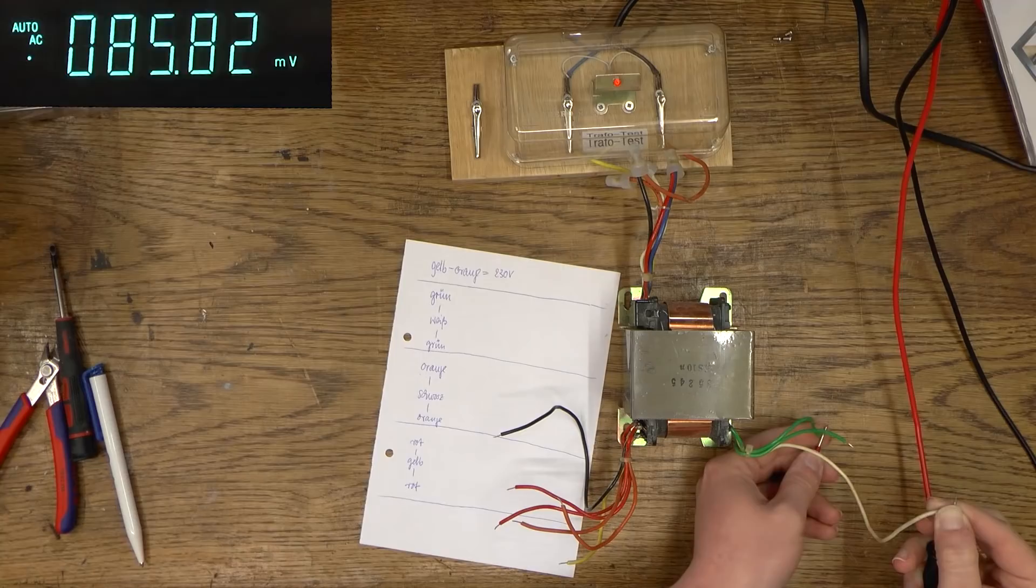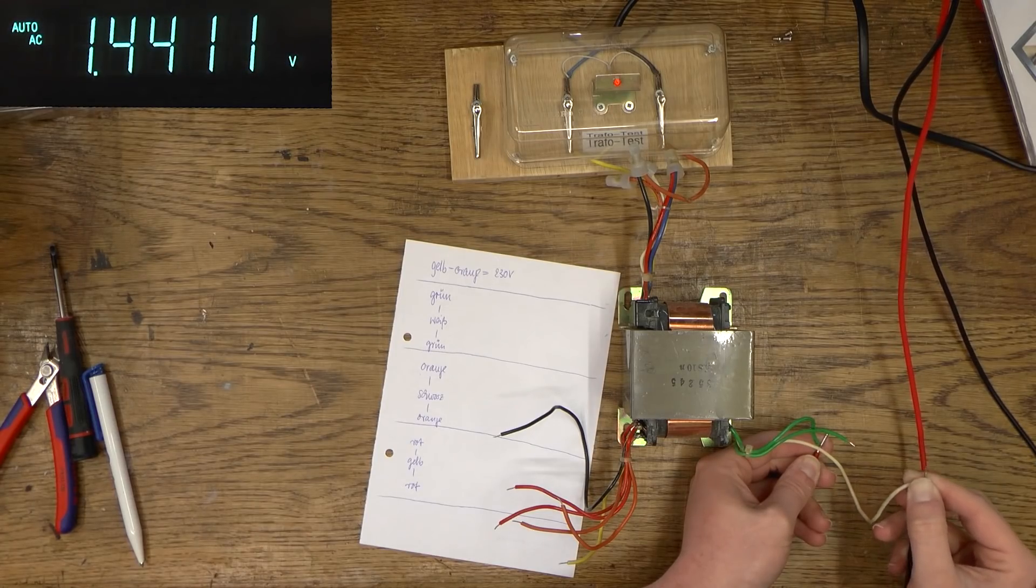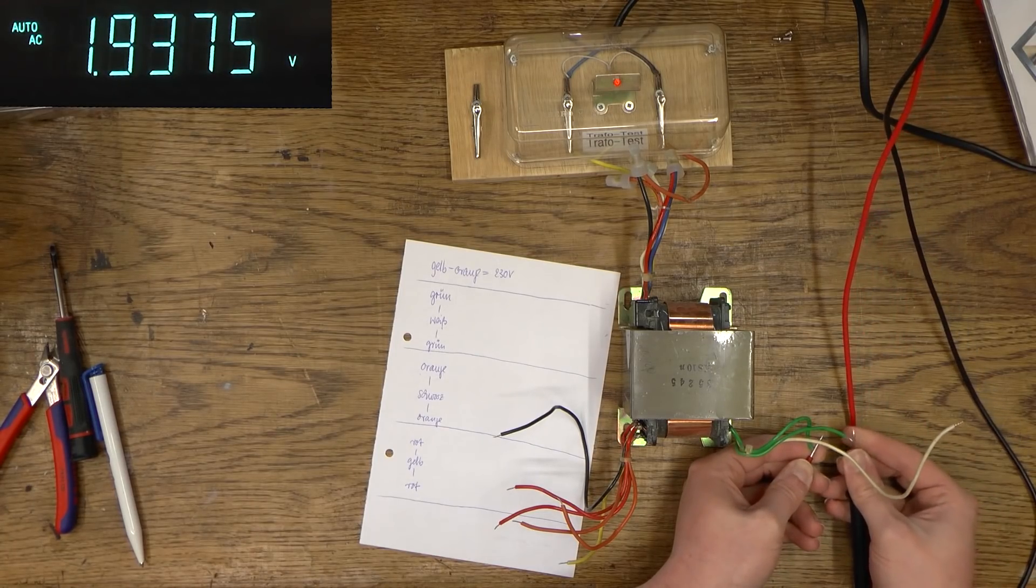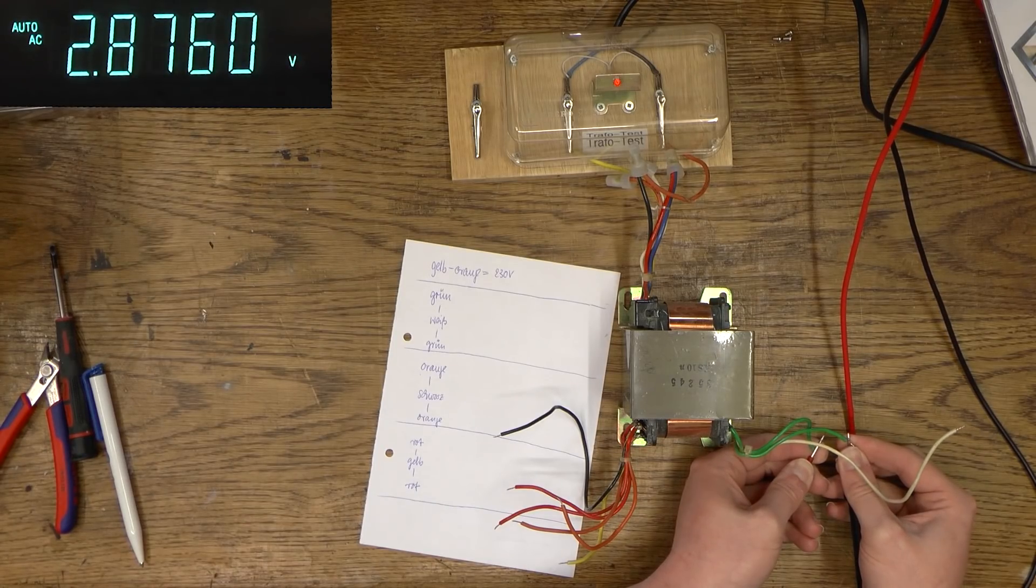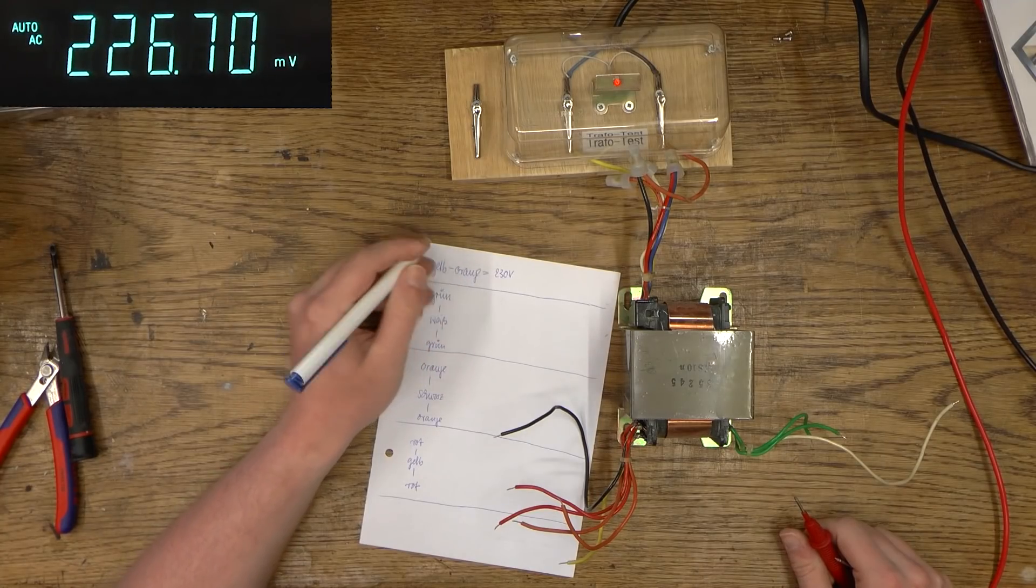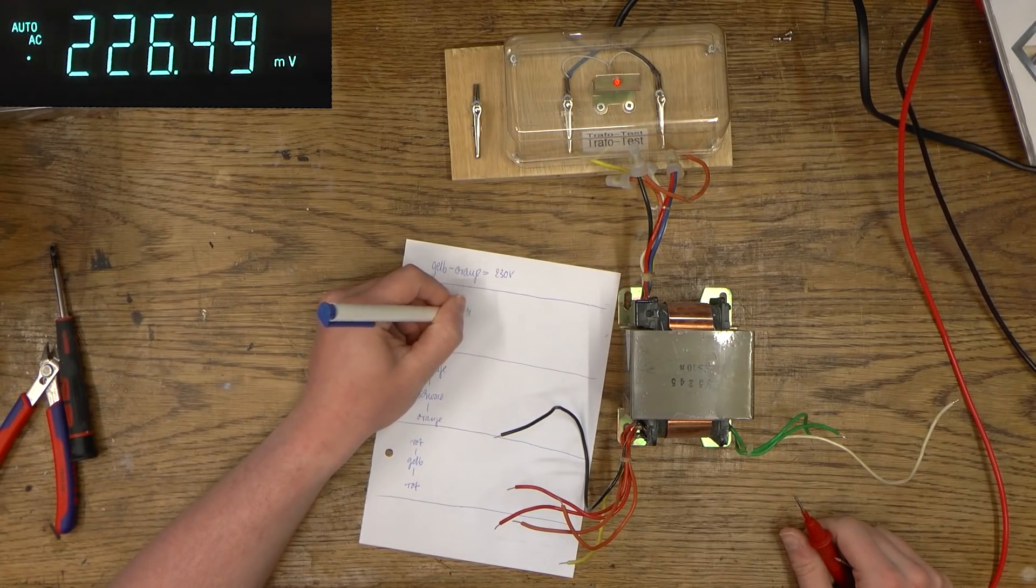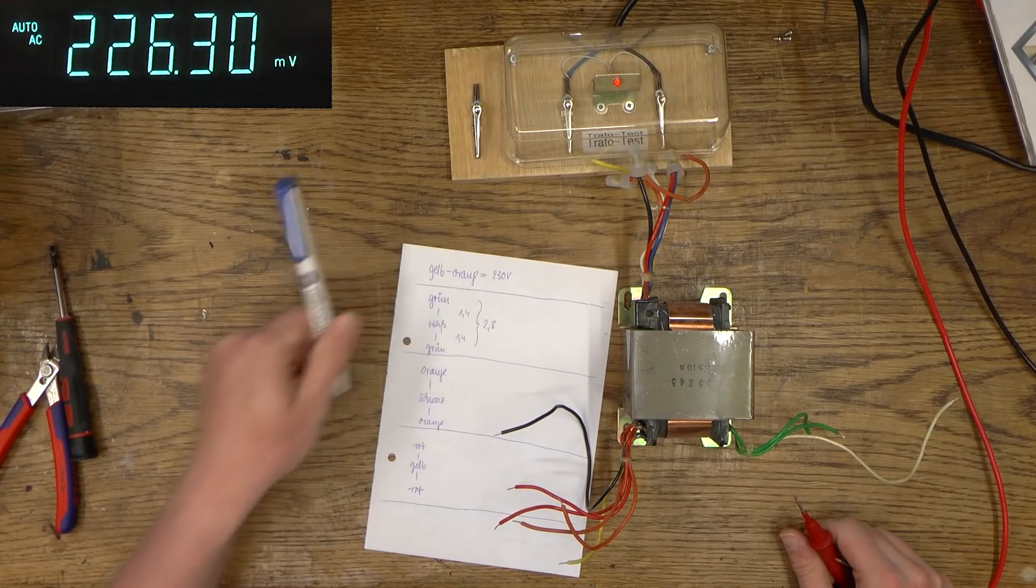And that is well, that's interesting. We have about one and a half volts. Okay, let's test the other one. Again, one and a half volts. That is strange. Let's try green. That's 2.8. Okay, I'm just going to write this down. We got 1.4, 2.8.